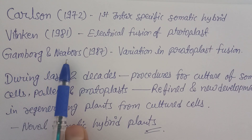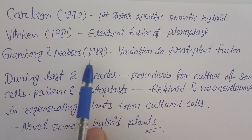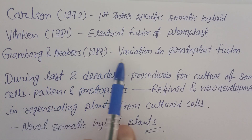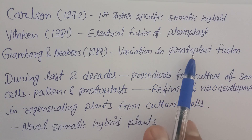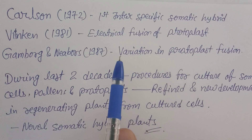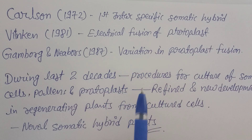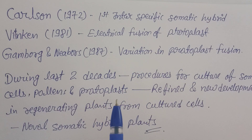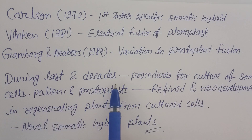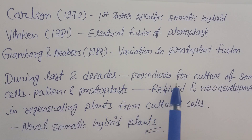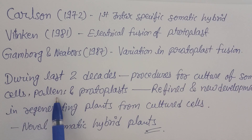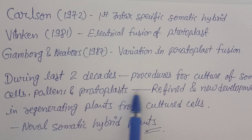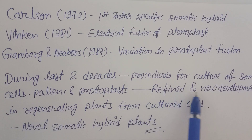Gambor and Nebor in 1987 told about variations in protoplast fusion being possible. After this extensive series of research and development by different scientists, during the last two decades the procedure of culturing callus, somatic cells, pollens, and protoplasts was refined and new developments in generating plants from cultured cells took place.